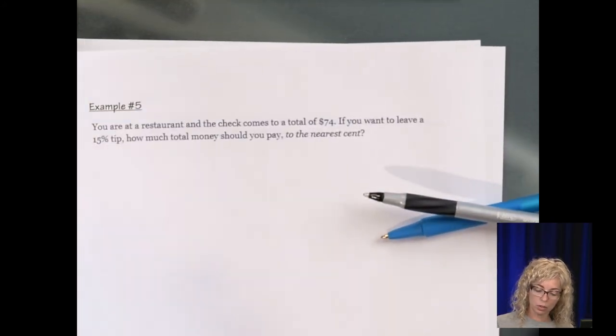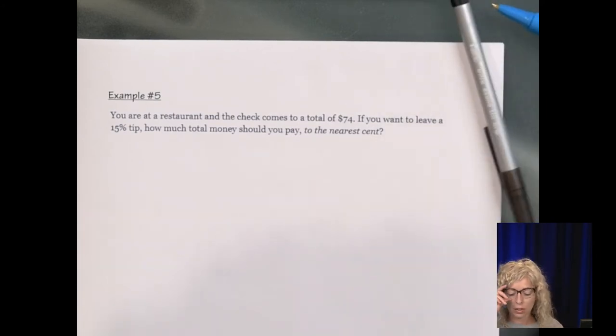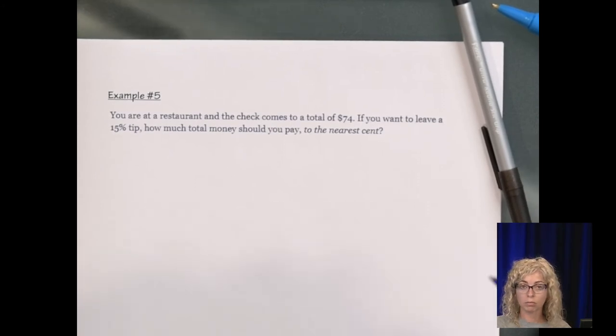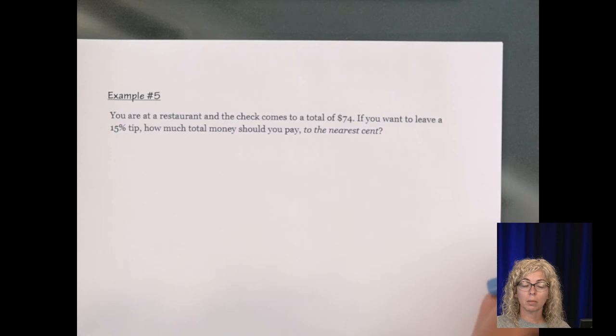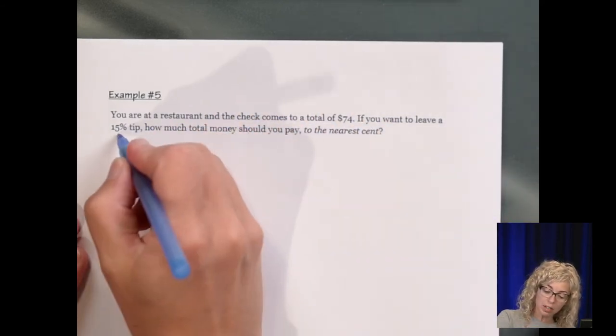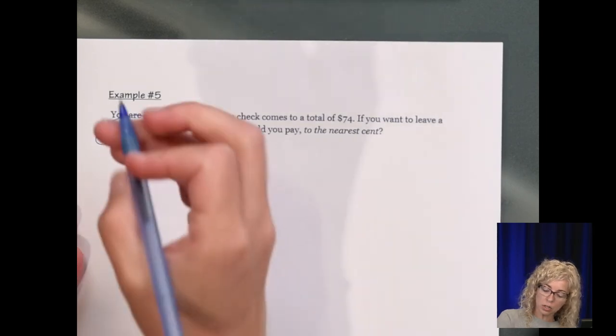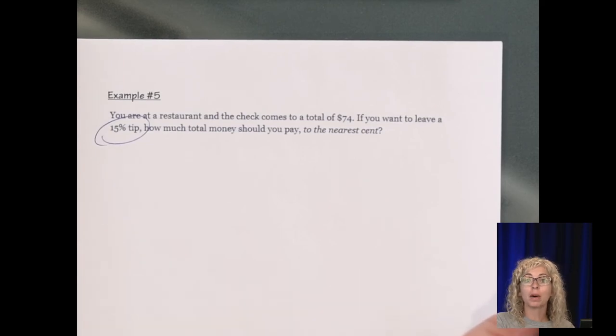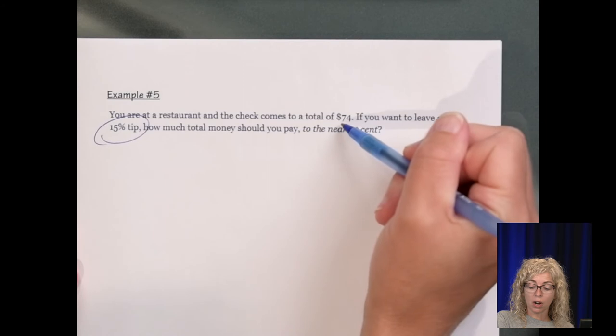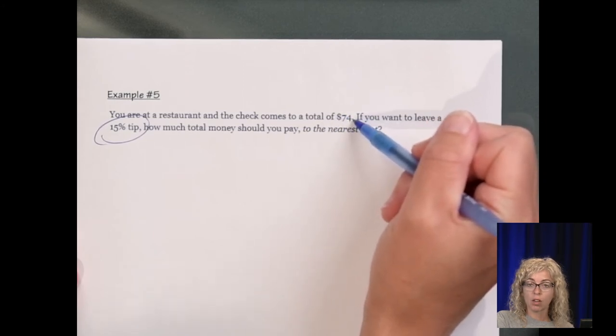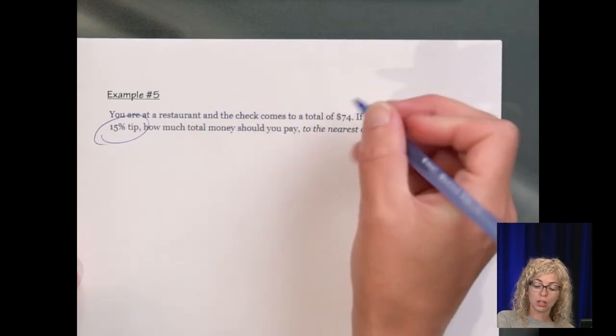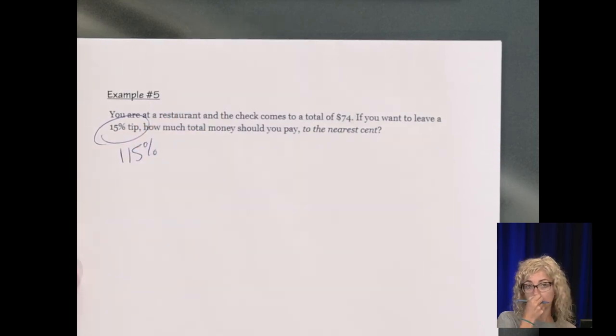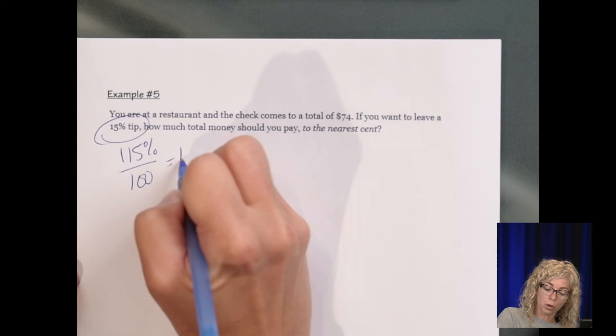We have two more examples. So you're at a restaurant, and the check comes to a total of $74. And you want to leave a 15% tip. How much total money should you pay? Now many of you are going to calculate the tip and then add the tip. But one way to think about it is if you're paying tip, you're actually paying, it's growth. You're going to pay some more money than what it's based on. So you're already paying that $74, or that total, and then you're adding to that. So you're going above 100% of the pay. So that's 115%. Divide that by 100, and it's going to be 1.15.